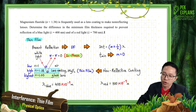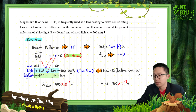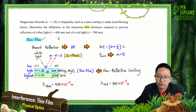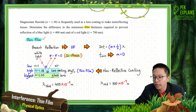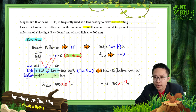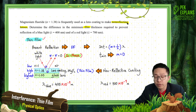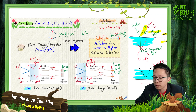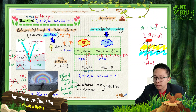So first of all, we need to identify — we know this is about thin film because it mentioned about film. And then, what type of thin film? Is the refractive index low-high-low, or low-high-highest? The question says making non-reflecting lenses. So this is a non-reflecting thin film, which refers to a non-reflective coating.